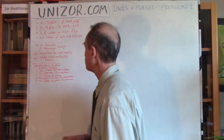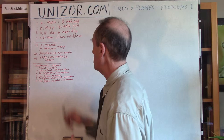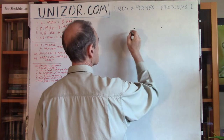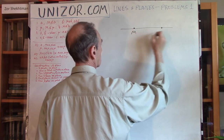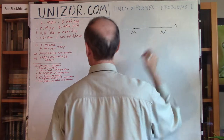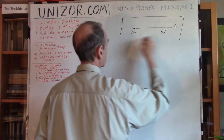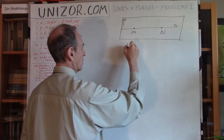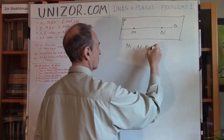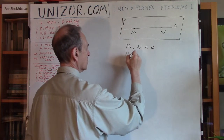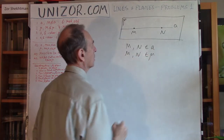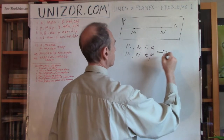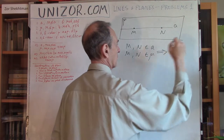Axiom number one: if there are two points on line A, points M and N, which belong to a certain plane — so M and N belong to line A and also belong to plane Mu — then the whole line which connects them belongs to this plane. That's axiom one.